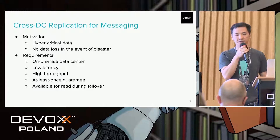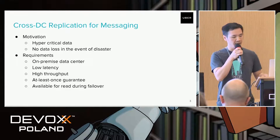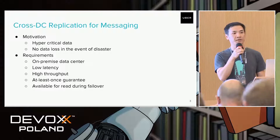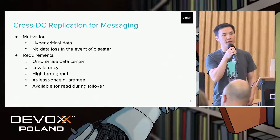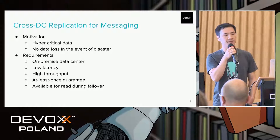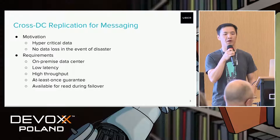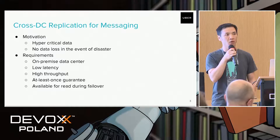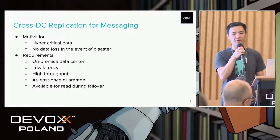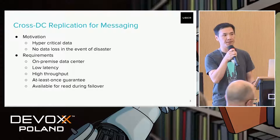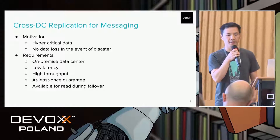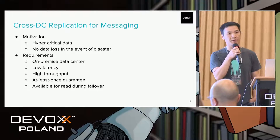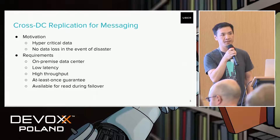Doing replication asynchronously is not sufficient because we need to acknowledge to the producer that the data is really persisted in the other data center. In addition to the no-data-loss guarantee, we also have other requirements. For example, we are running on our own on-premise data centers, and we need to provide very low latency and very high throughput for both producers and consumers. We also need to provide very high availability — even during a failover we need to make sure the data is available for read.